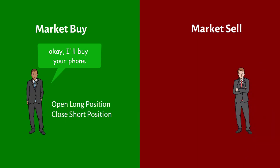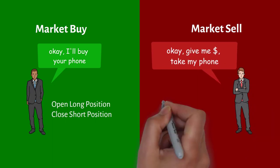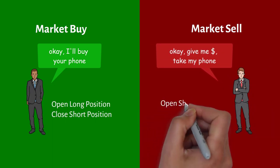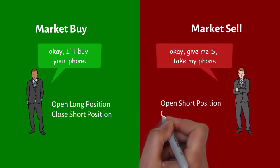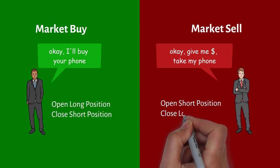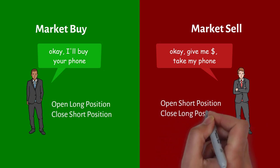The second type is market sells. They work in the opposite way — they occur when a trader agrees with the price in a buy order and sells an exchange asset, opening a short position or closing a long one.